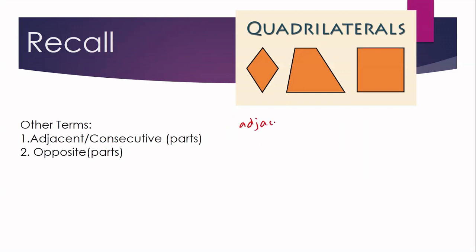If we look for adjacent vertices, there are also four pairs. The adjacent vertices are: point Q and point R, point R and point S, point S and point T, and point T and point Q. So these are the four pairs of adjacent vertices.